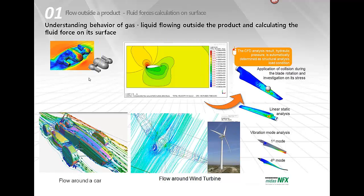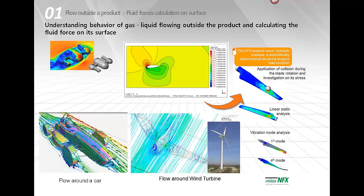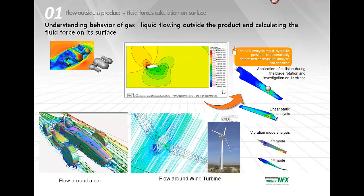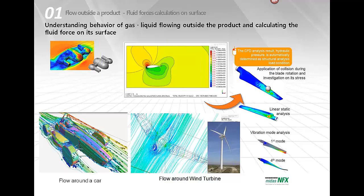When you want to understand the behavior of gas or liquid flowing outside a product and calculate the fluid force on its surface, CFD is also useful. Examples include flow around a car, wind tunnel analysis, and flow around a wind turbine or wing. You can then apply the pressure results to the structure to perform a coupled CFD and structural analysis.